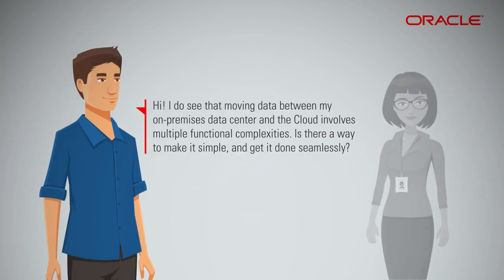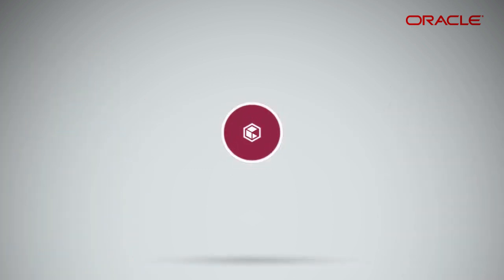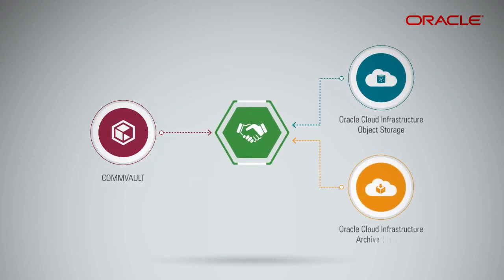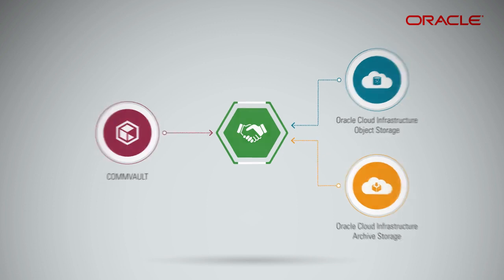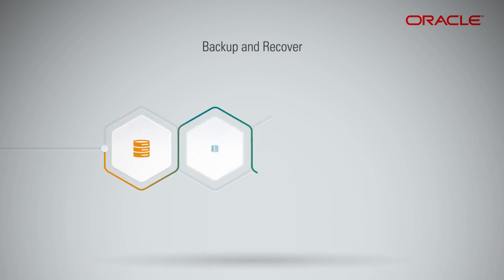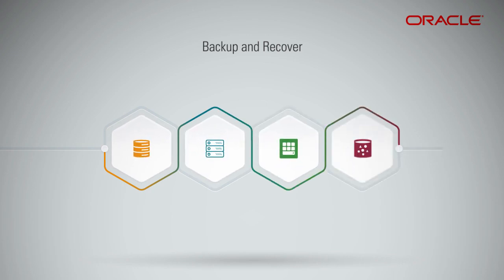I do see that moving data between my on-premises data center and the cloud involves multiple functional complexities. Is there a way to make it simple and get it done seamlessly? Sure. Commvault supports Oracle Cloud Infrastructure Object Storage or Oracle Cloud Infrastructure Archive Storage, enabling customers to back up and recover enterprise workloads from any location to Oracle Cloud Infrastructure.